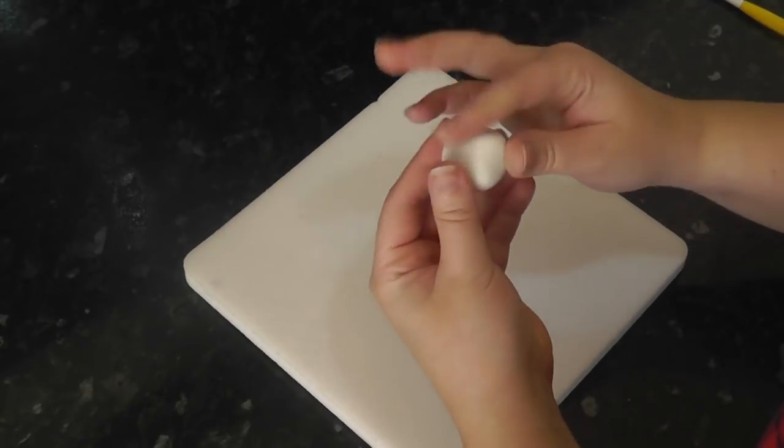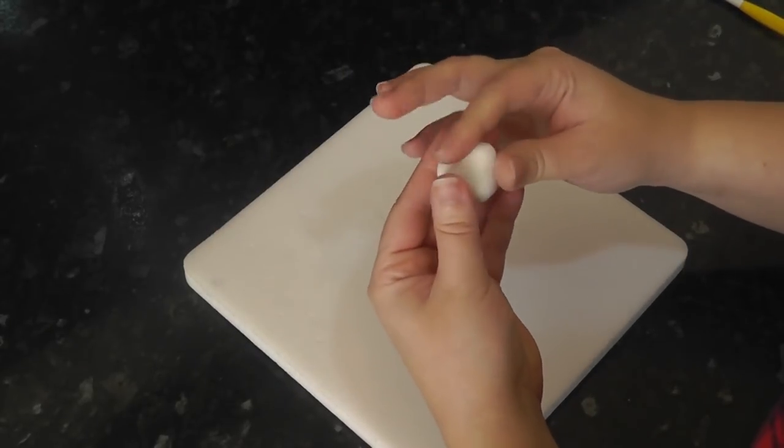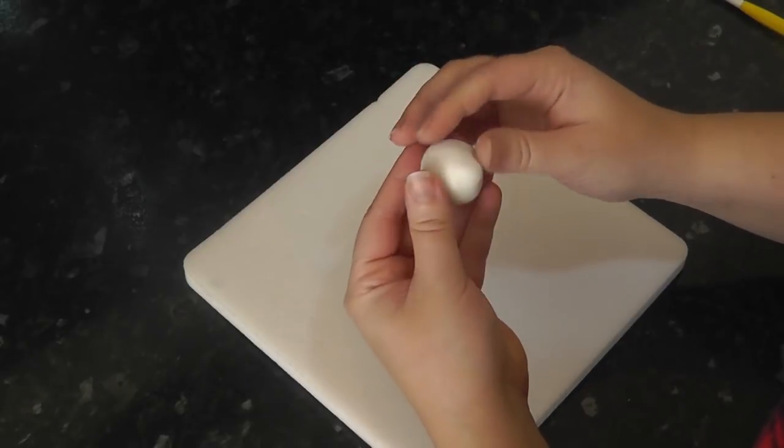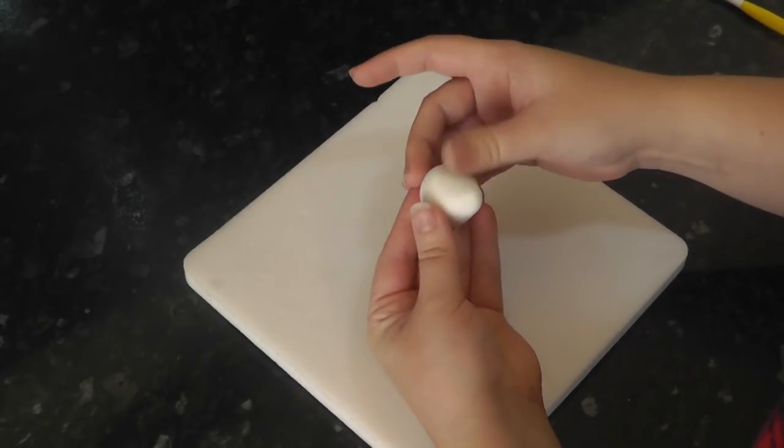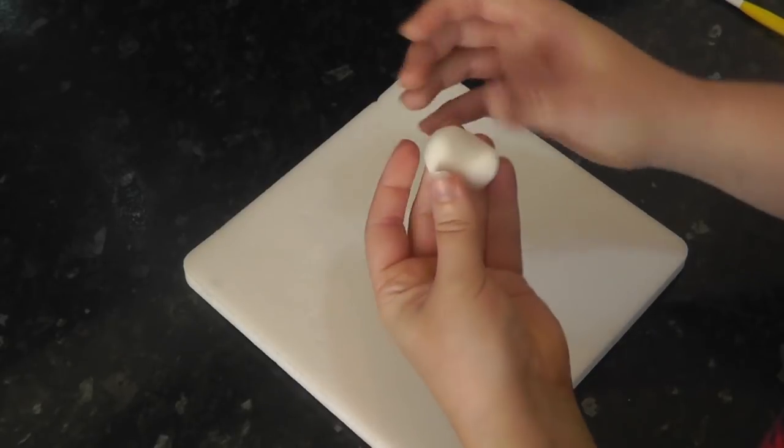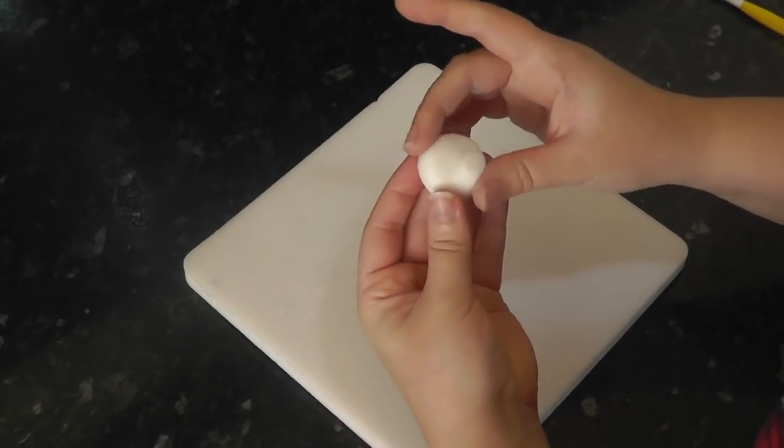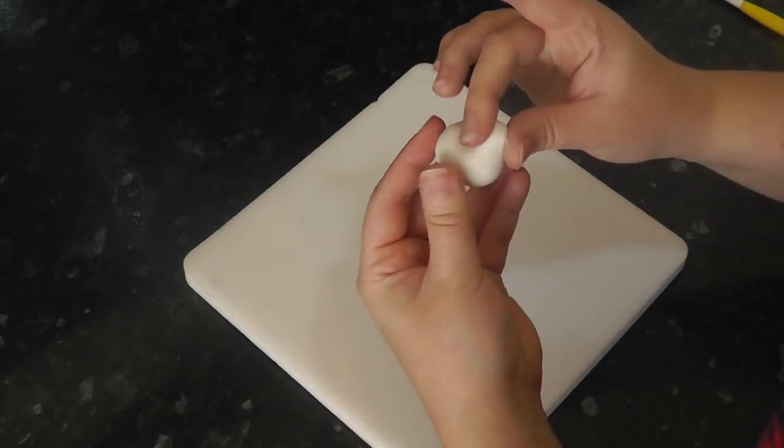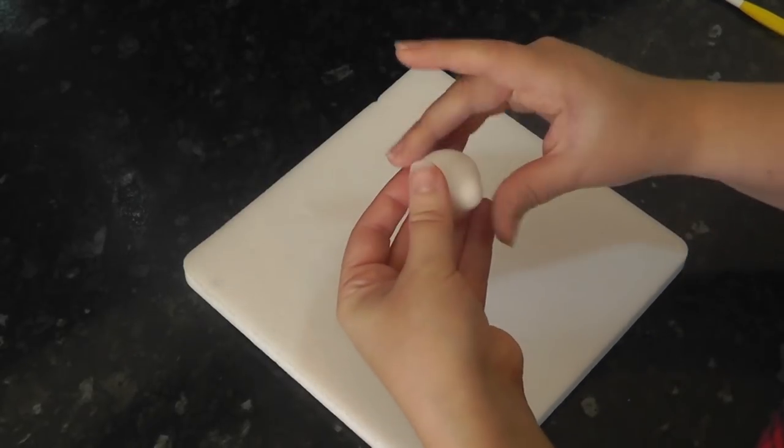The head starts as a ball and you just want to gently pinch to create a muzzle. Then push in with your finger above the muzzle for where the eyes will go. Flatten and square off the mouth area before pushing in at the sides of the head with your finger to create cheeks.